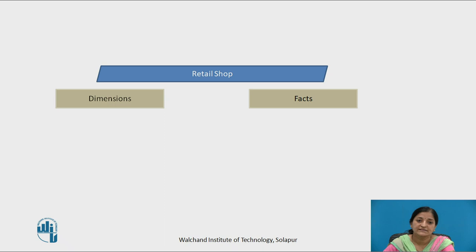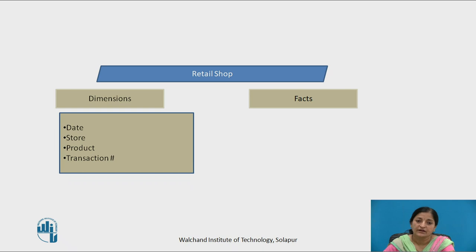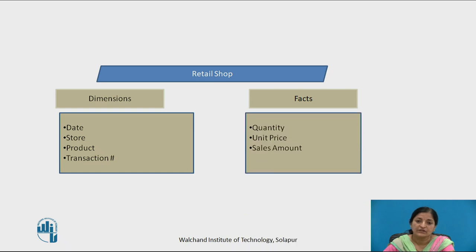All this data can be categorized into dimensions and facts as follows. Date, store, product, and transaction numbers are the dimensions that describe the business numbers or facts, such as quantity, unit price, and sales amount. These facts help to measure the performance of various business processes.